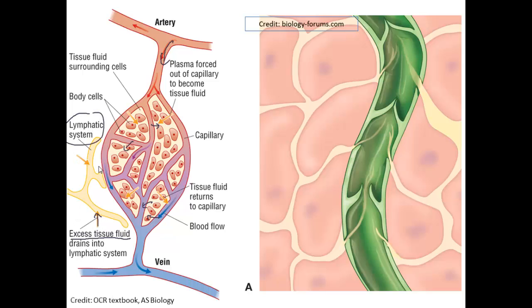And a lot of fluid gets returned this way - it doesn't all make its way back into the capillaries at the venule end. This is a close-up of a lymph vessel over here and you can see a feature it shares in common with veins - it has pocket valves.